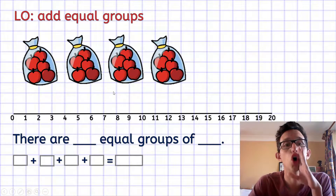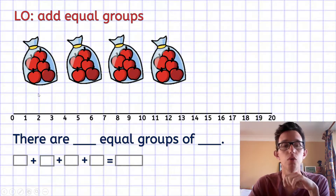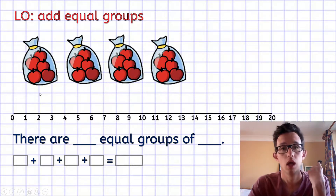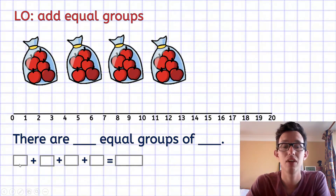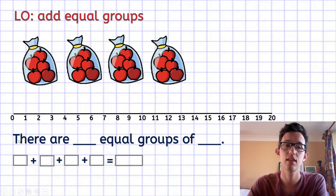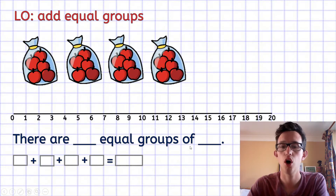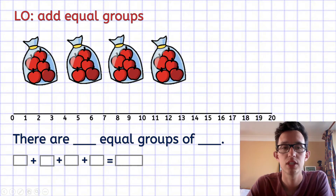There are four equal groups of five. You don't have to draw the number line, but if it helps you, please do. You can also use counters, cubes, or whatever you have at home. What I'm really looking for is the number sentence. This sentence here might need an adult to write it, and you fill in the gaps: there are blank equal groups of blank. Good luck — I look forward to seeing it in your books.